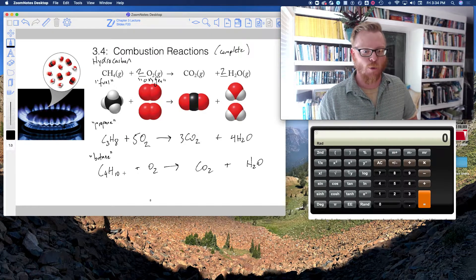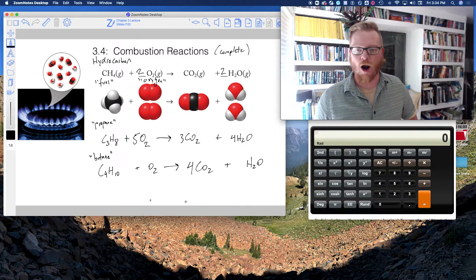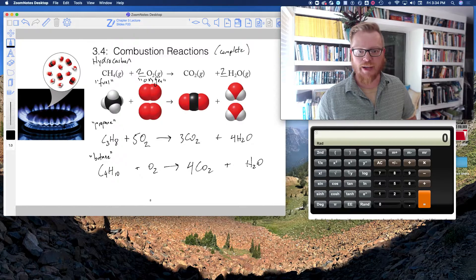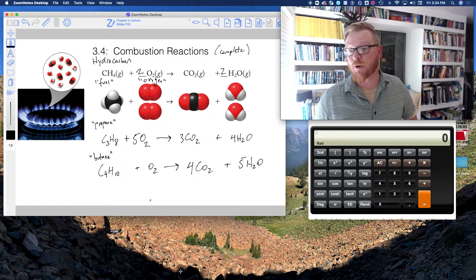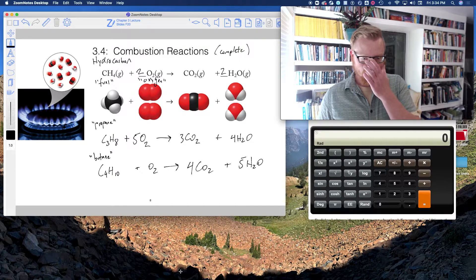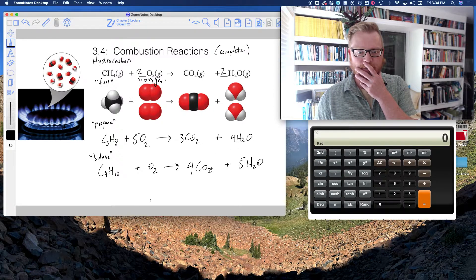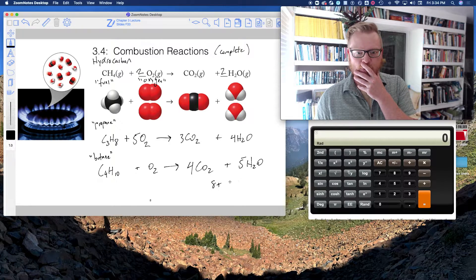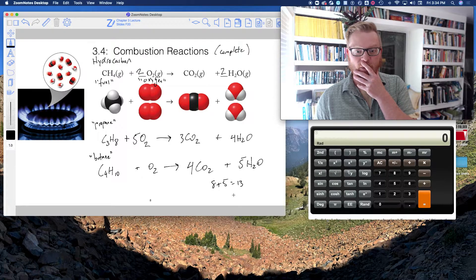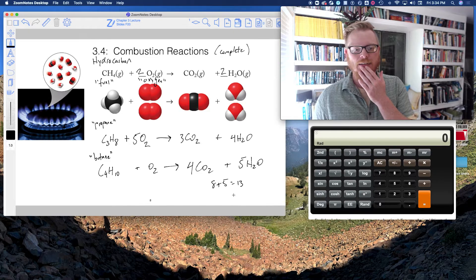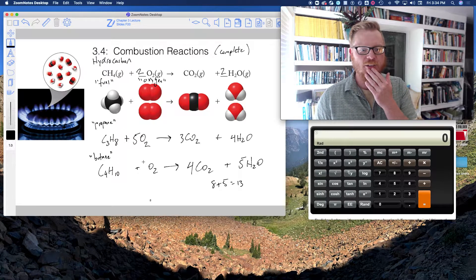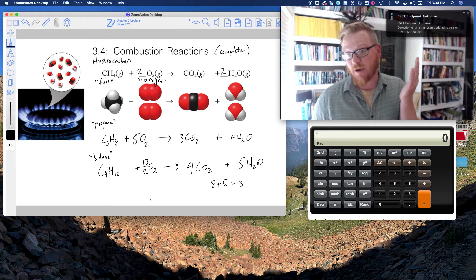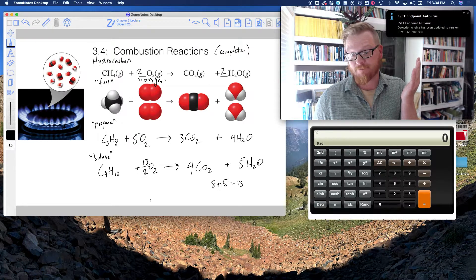So four carbons, four carbons, easy, done. Ten hydrogens, I've only got two over here, so let's put a five. And now I've got four times two gives me eight plus five times one gives me five and that all equals 13. So I can easily just say 13 divided by two, right?